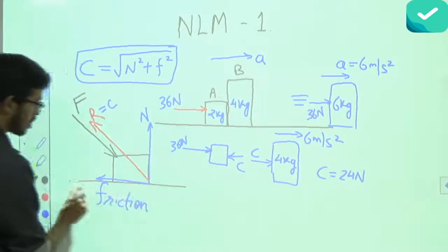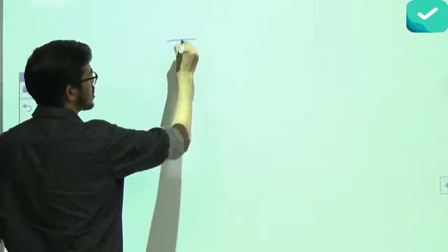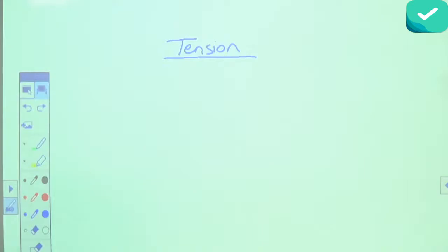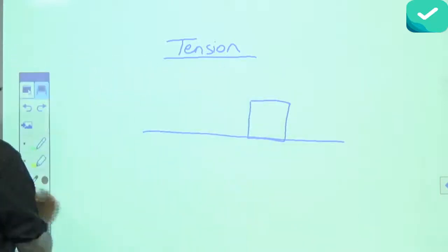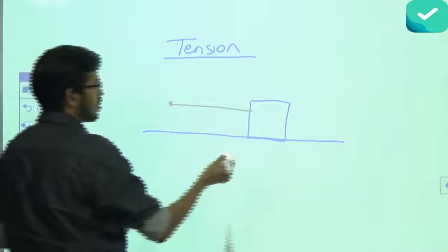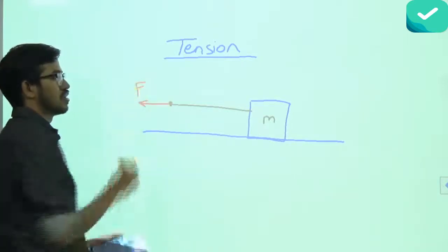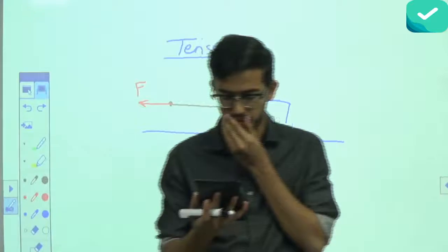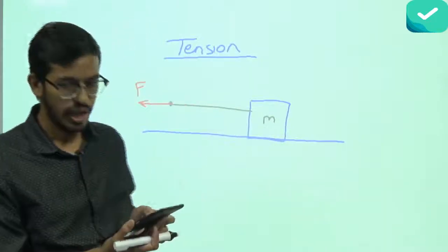Now, we understand contact force and normal force. Time to talk about tension force. When a rope is connected to a block on a horizontal ground and force F is applied at one end of the rope, how much force does the block feel? There is a class coming on pseudo force — stay tuned, next Friday and Saturday lectures are on this topic, a full class on pseudo force. So how much force will the block feel if force F is applied on the rope?